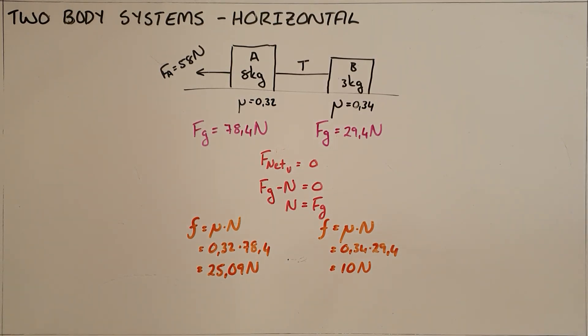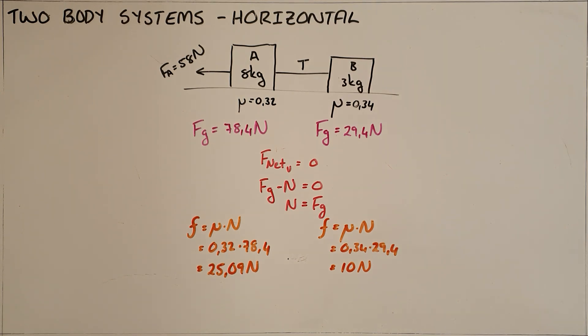A two-body system is a system in which there are two objects with different masses that are tied together by a rope or a string.